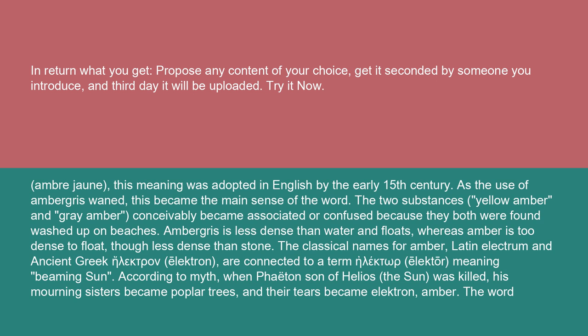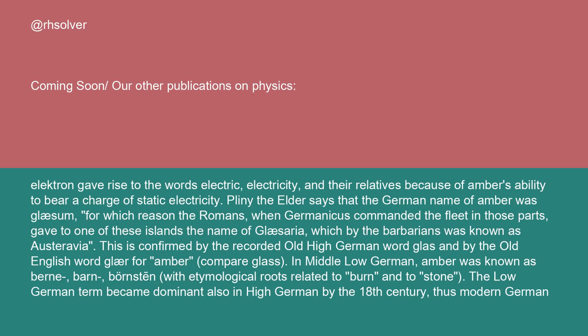The classical names for amber — Latin electrum and ancient Greek elektron — are connected to a term elector, meaning beaming sun. According to myth, when Phaeton, son of Helios the sun, was killed, his mourning sisters became poplar trees, and their tears became electrin, amber. The word electrin gave rise to the words electric, electricity, and their relatives because of amber's ability to bear a charge of static electricity.